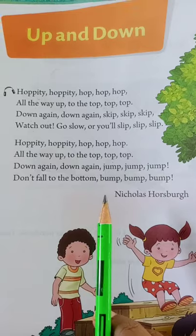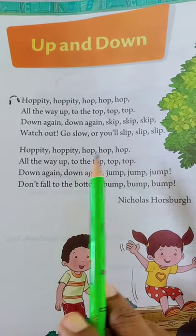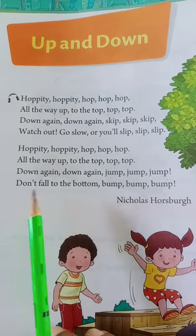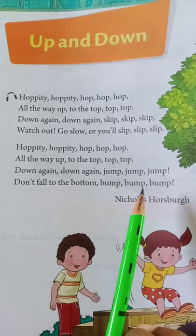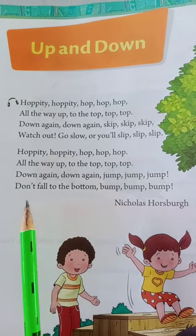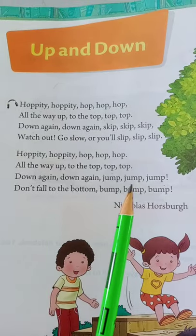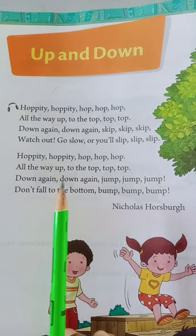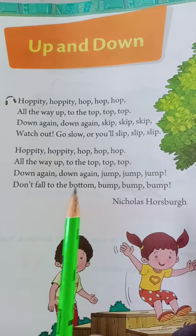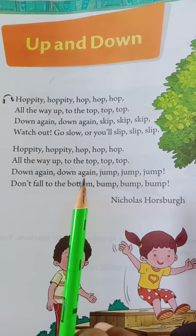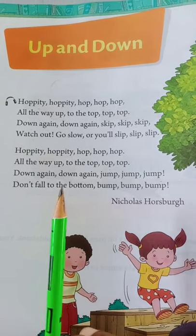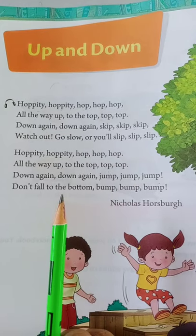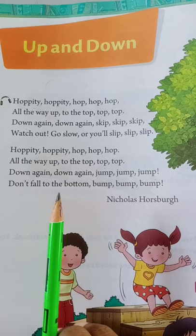Coming to the next paragraph, the same theme continues — hoppity hoppity hop hop hop, all the way up to the top. Down again, down again. Jump, jump, jump. Don't fall to the bottom — bump, bump, bump. Wherever you go you will hop, skip, or jump, and at last you may get hurt. That's why they say don't go fast, go slow, watch and go. Otherwise you will fall. An elder is saying watch out, go slow — or you will slip, slip, slip. Always listen to what your parents, grandparents, or teacher says. While playing, be very careful and don't get hurt.